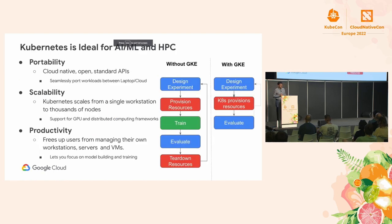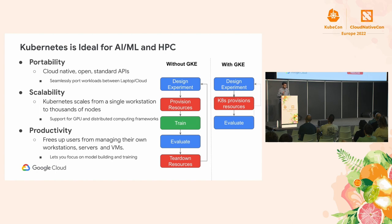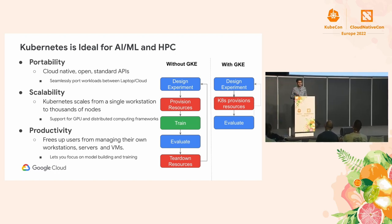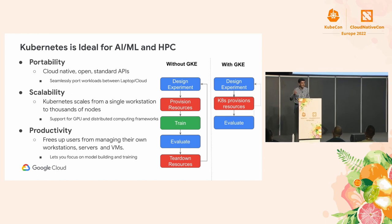In my humble opinion, Kubernetes is an ideal platform for AI/ML and high-performance computing workloads. There are three core reasons why. Number one is portability. Kubernetes provides open, standard-based, and cloud-native APIs. This allows practitioners to seamlessly port workloads between laptops, private data centers, and the public cloud.